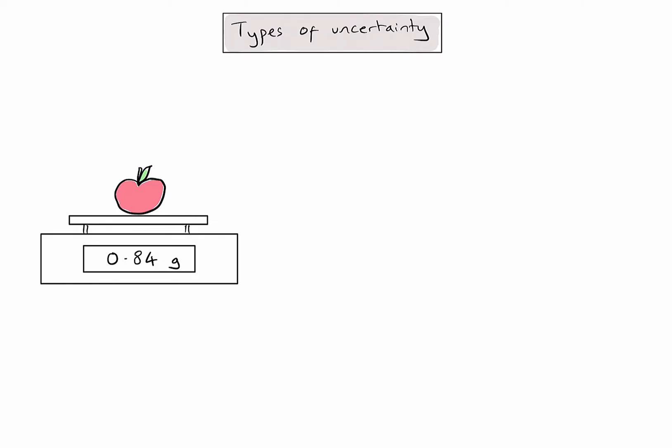The first type of uncertainty we need to be aware of is absolute uncertainty. The absolute uncertainty of a measurement gives us a range of uncertainty in the same units as my measurement is taken in.